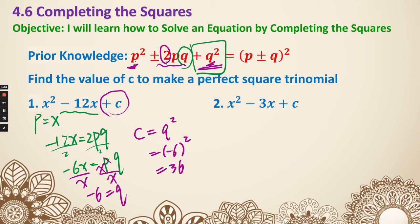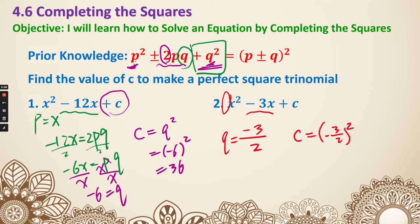Now let's look at another example and see if there's a shorter way. The middle number is negative 3x and there's no number in the front. All we need to do is take the middle coefficient, negative 3, divide by 2, which gives us q. As for c, we square that: negative 3 over 2 squared gives us positive 9 over 4. So we take the middle number, divide by 2, then square it — that gives us the last number we need. We'll see more complicated examples when there's a front coefficient.